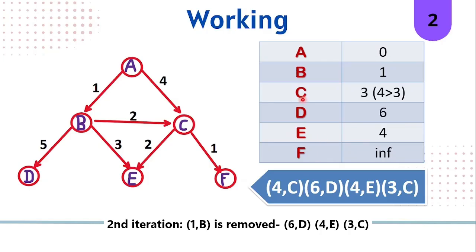If you observe 3C, the already present value 4 was greater than 3, so we've updated the value attached to C to 3 and we'll be adding 3C to our priority queue.